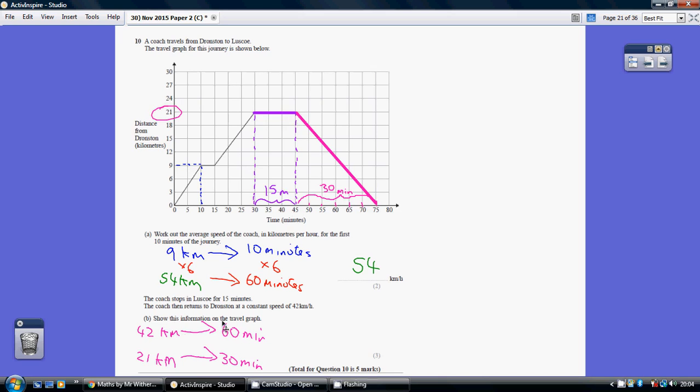Now the journey back, we're traveling at a constant speed of 42 kilometers in an hour. 42 kilometers in 60 minutes.